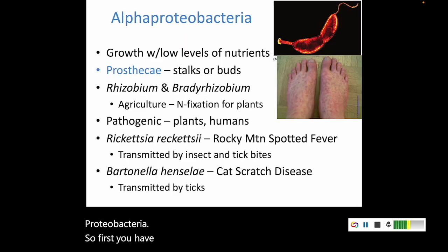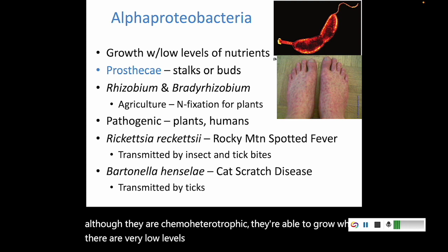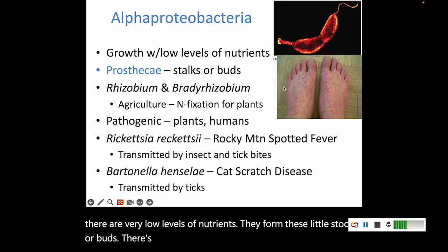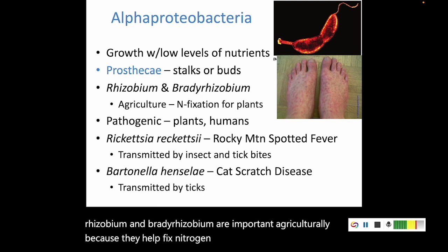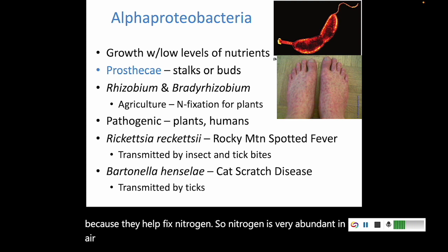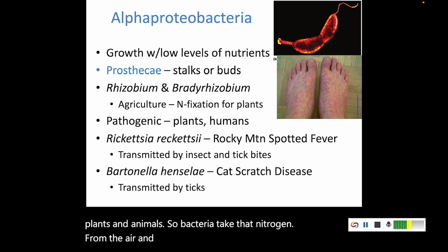First, we have alpha proteobacteria. Although they are chemoheterotrophic, they're able to grow where there are very low levels of nutrients. They form little stalks or buds called prosthecae. Within them, the genera Rhizobium and Bradyrhizobium are important agriculturally because they help fix nitrogen. Nitrogen is very abundant in the air around us, but it is completely unusable for plants and animals. Bacteria take that nitrogen from the air and convert it into forms that are usable for plants.